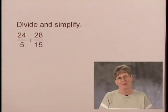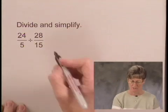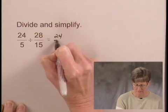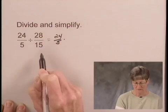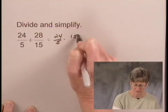Remember when we divide using fraction notation, we multiply by the reciprocal of the divisor. So we can write this as 24 over 5 times the reciprocal of 28 over 15, which is 15 over 28.